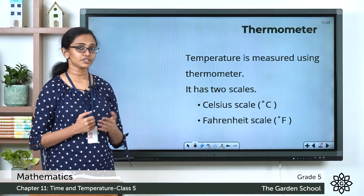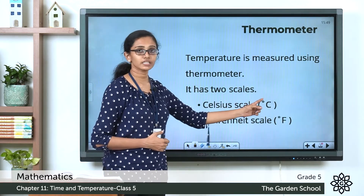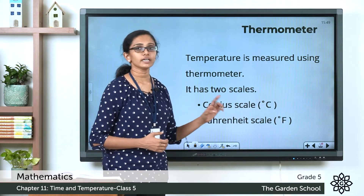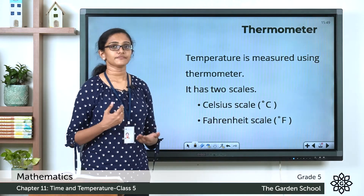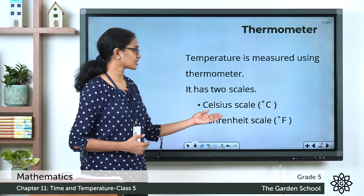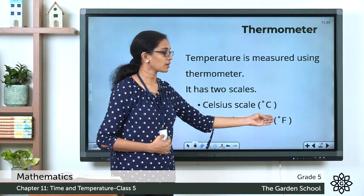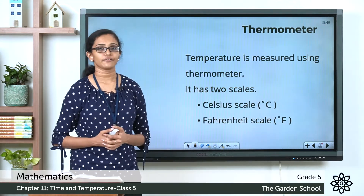A Celsius scale is represented by a small circle written at the top followed by a capital C. And the Fahrenheit scale is represented by a small circle at the top followed by the capital letter F.